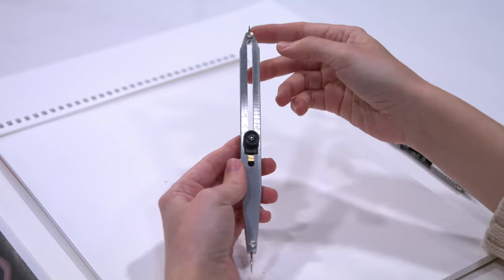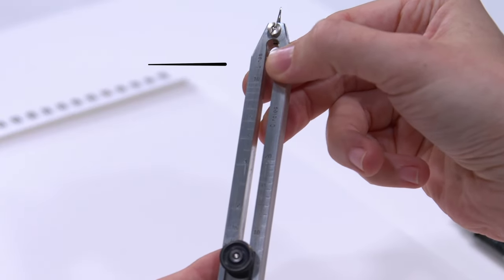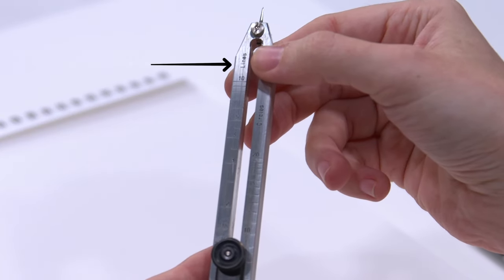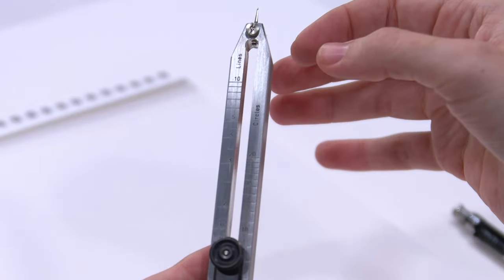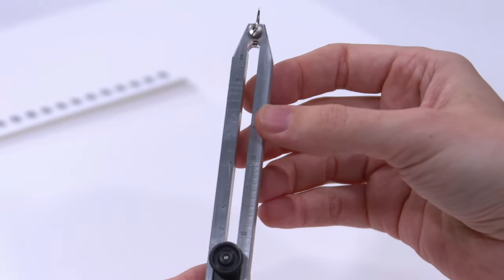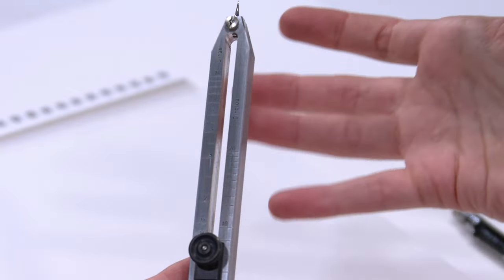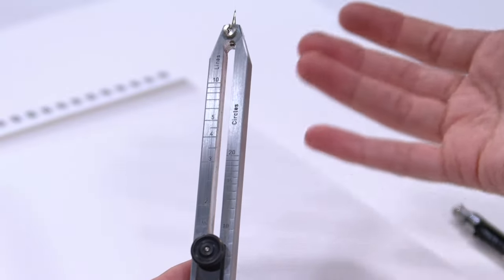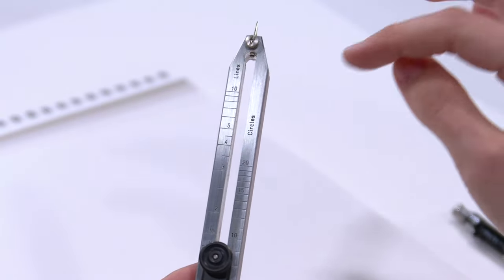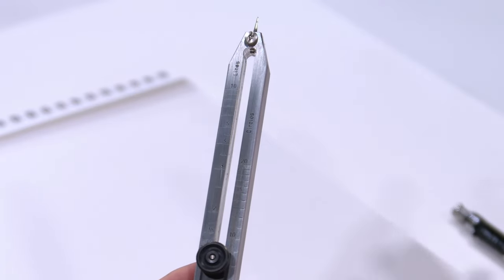So I'm going to be focusing on the line side of this proportional divider today. It does have a circle side, and some proportional dividers will come with other markings on the opposite side, but those are really more for people who are interested in cartography or architecture, so for our purposes the line side is going to do what we want.